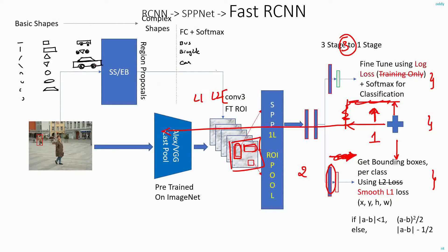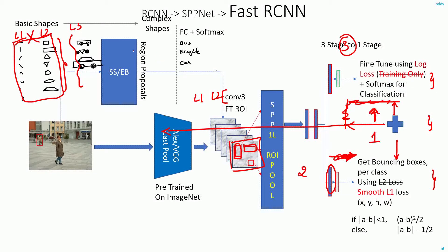Why is this the case? In the initial layers like layer 1 and layer 2, the network learns basic shapes, textures, and patterns. Only from layer 3 or layer 4 onwards does it start learning complex shapes. So even if you fine-tune these two early layers, you won't get much change or improvement in accuracy. There is no point in unnecessarily spending time training these two layers. Instead, training from layer 3 onwards gives comparable levels of accuracy.